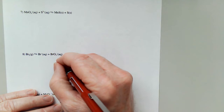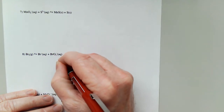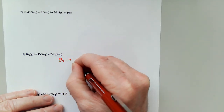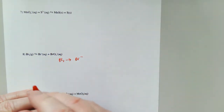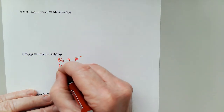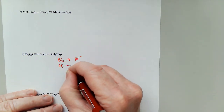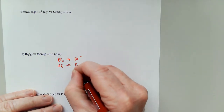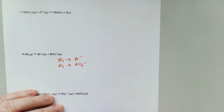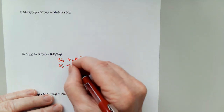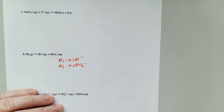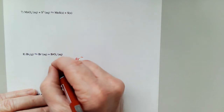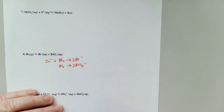Let's look at number eight. Br₂ gives us Br⁻ — it's a disproportionation again. And Br₂ gives us BrO₃⁻. So I put a two there and a two there — that balances the bromines. I can actually just throw in the two electrons right away.